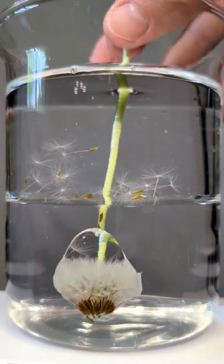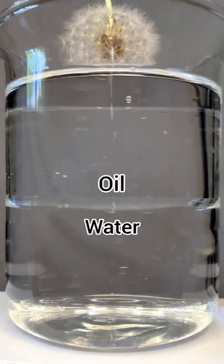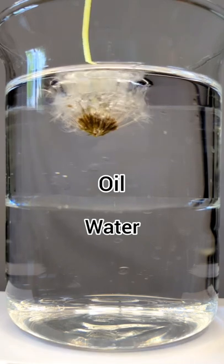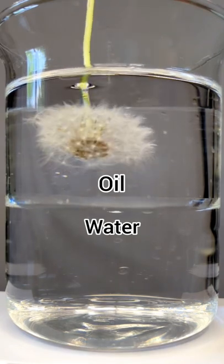Dandelion seeds are hydrophobic, which means they repel water but attract oil. Oil is kind of the opposite of water. The oil is the top layer and it doesn't mix with the water.